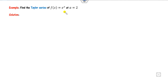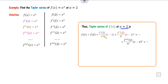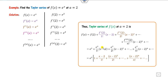Now find the Taylor series for e^x about a = 2. The derivative of e^x is always e^x, so all derivatives at x = 2 equal e². Substituting into the Taylor series formula gives: e² + e²/1!·(x−2) + e²/2!·(x−2)² + ... You can factor out e² to get e² · Σ (x−2)ⁿ/n! from n = 0 to ∞. You can also find the interval of convergence using the ratio test as discussed previously.